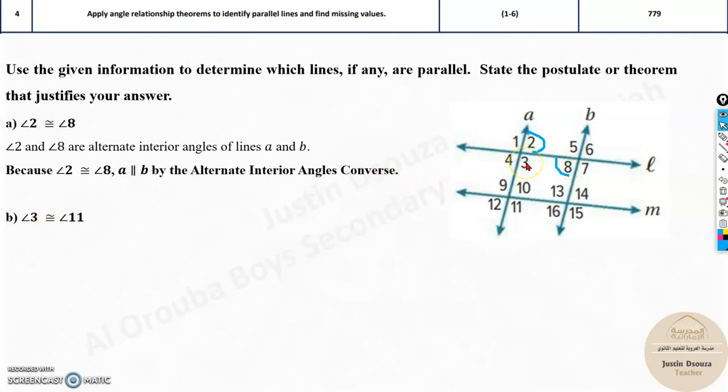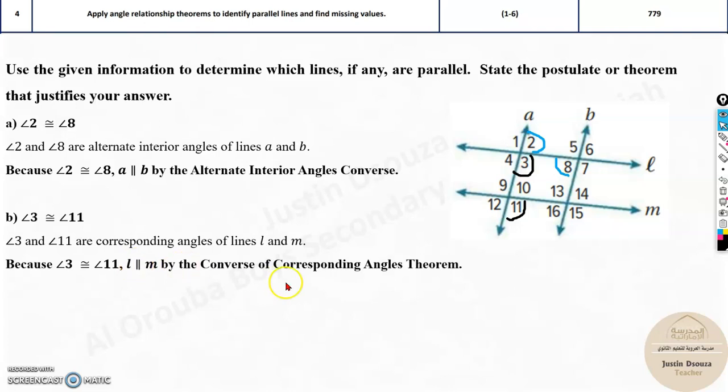Over here, 3 and 11. 3 is over here, 11. The positioning is the same, isn't it? The position. 3 is down right side. 11 is down right side. It's corresponding. So, converse of corresponding angles theorem.